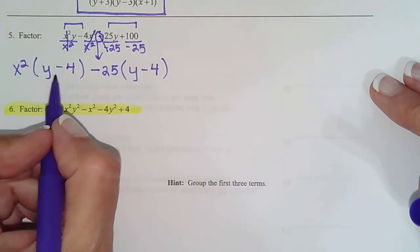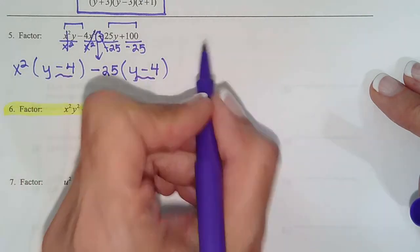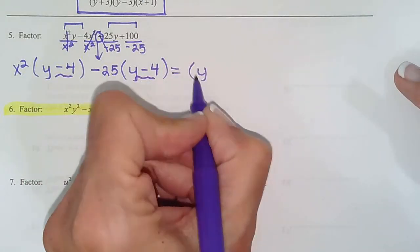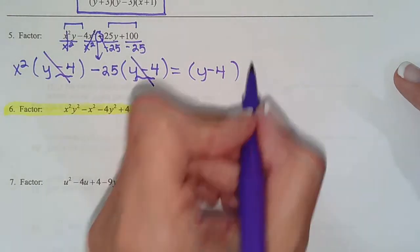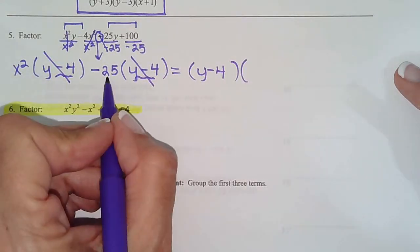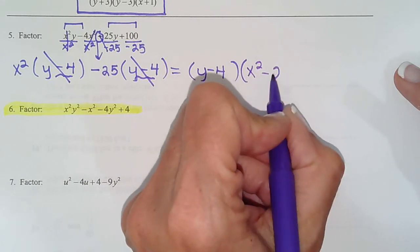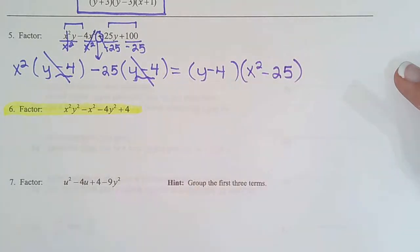So remember, when you go to divide each term, make sure you divide by negative 25, not just 25. And that turns out to be positive 1y negative 4. Woohoo! They match! Yay! So that leaves us with y minus 4 as our third GCF. And then our second parenthesis will be what's left.